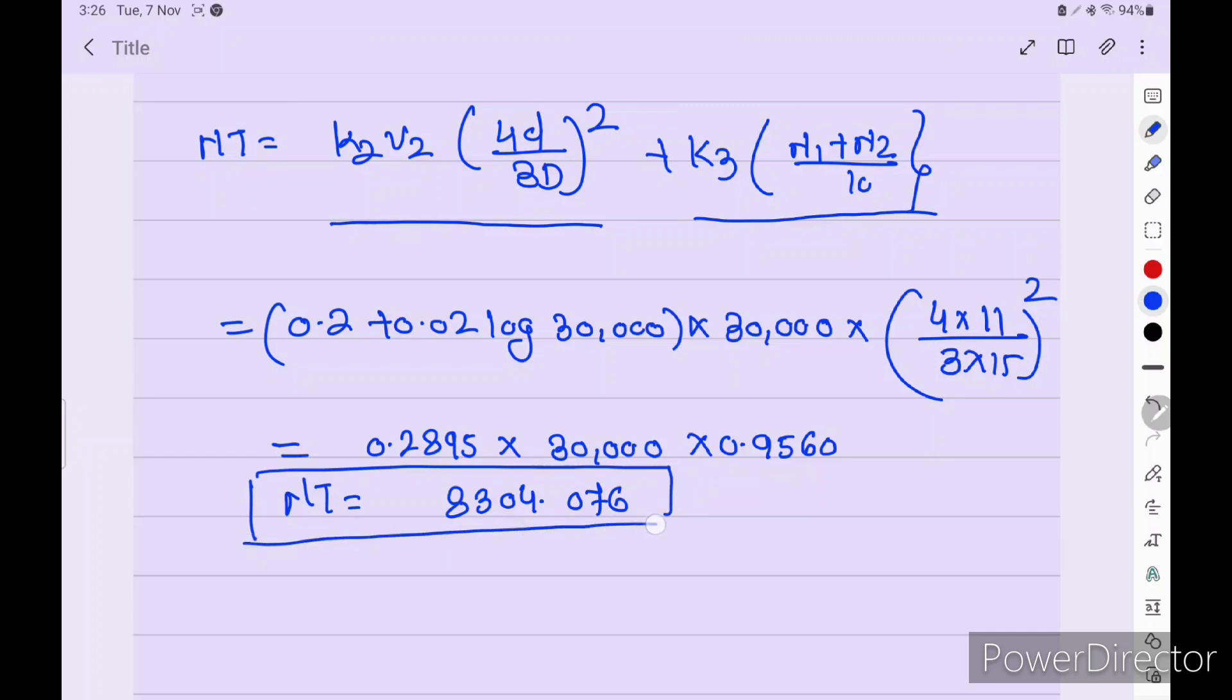Always NT value is less than gross tonnage because gross tonnage is total volume of enclosed space and NT is only for the cargo space in that particular question. So hope you understand this numerical. Sometimes it comes for 15 marks in the Part B section. So give five minutes, you will understand this question and you can solve.